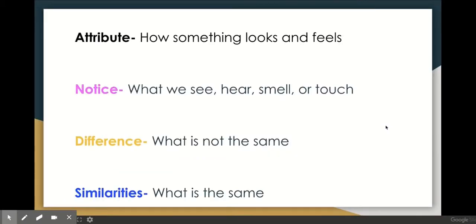Here are some vocabulary words we need to know. The first word is attribute. What is an attribute? An attribute is how something looks and how something feels. We can talk about shape, we can talk about size, we can talk about texture, if it's rough or smooth, we can talk about color.